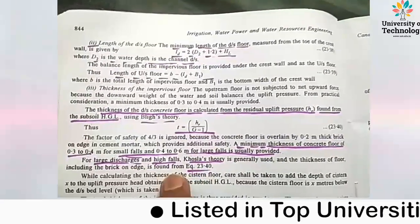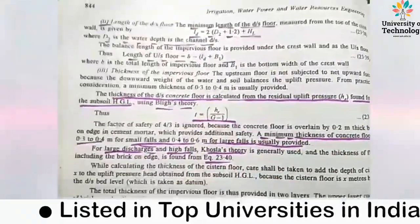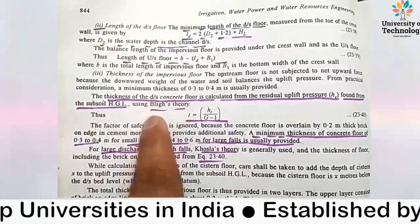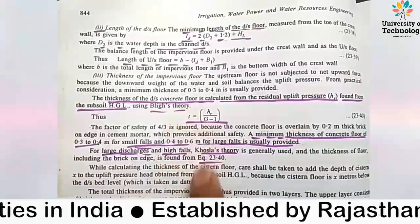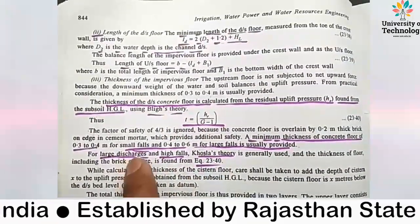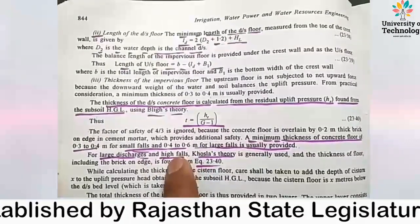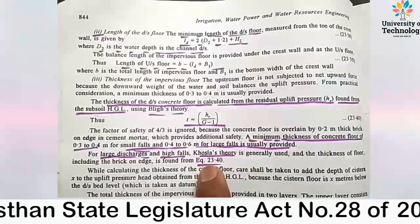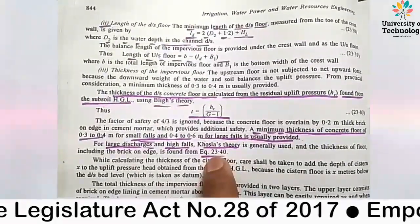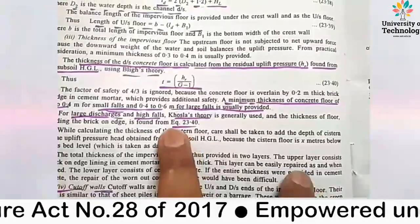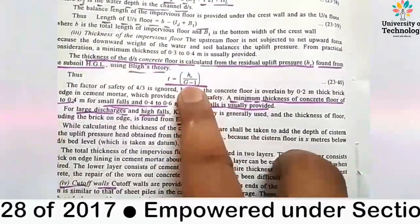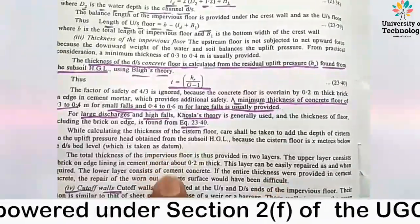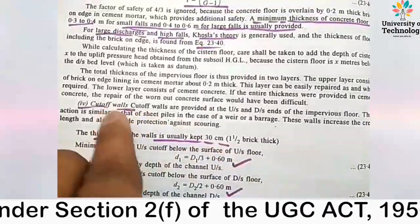This formula is based on Bligh's theory and is valid for small discharge. For large discharge and high falls, Khosla's theory is used, with the formula taken from equation 23.40. We will use this value further for calculating the thickness of the downstream concrete floor.